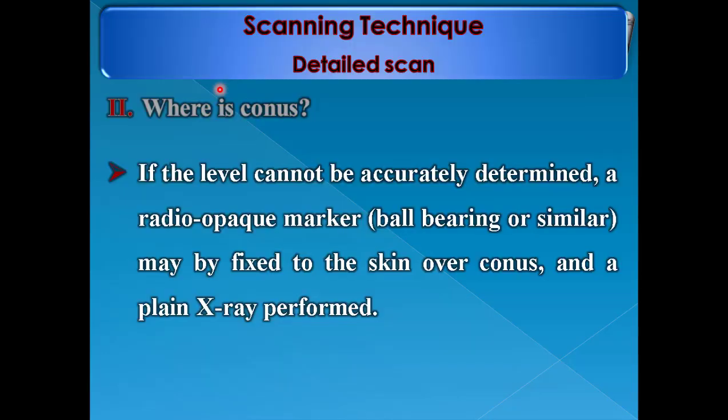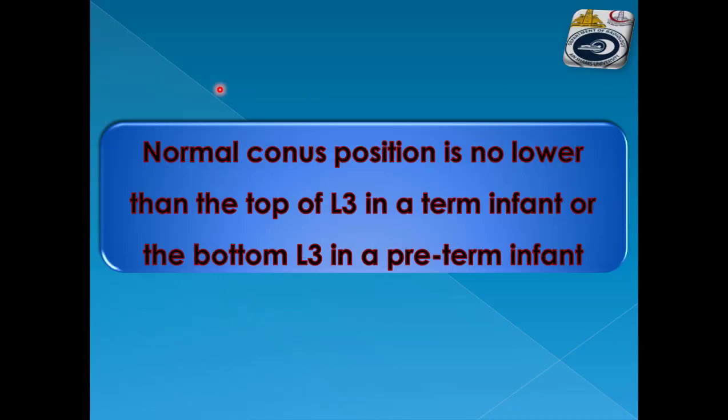If the level cannot be accurately determined, a radio-opaque marker may be fixed to the skin over the conus and a plain X-ray performed. Normal conus position is no lower than the top of L3 vertebra in a term infant, or the bottom of L3 vertebra in a preterm infant.